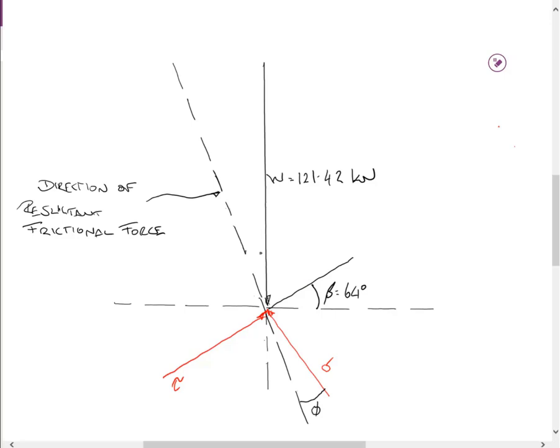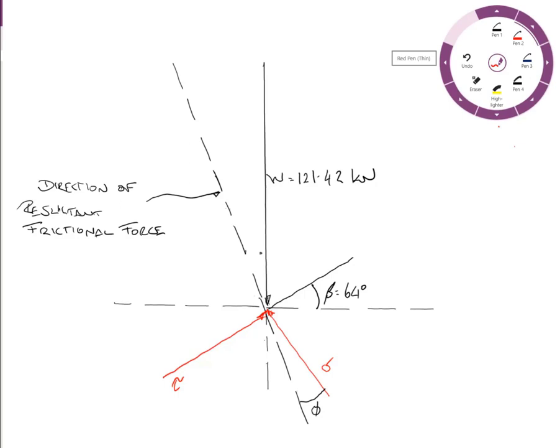Once you've got beta drawn in, draw in reference lines for sigma h and tau h. Tau h is the shear force line on this failure surface. We continue that line through to pick up the shear force plane. Sigma h is at 90 degrees to that line. We then get phi, which we know was 38 degrees. Come back from the sigma line and draw this reference line through, which gives us the direction of the resultant frictional force.